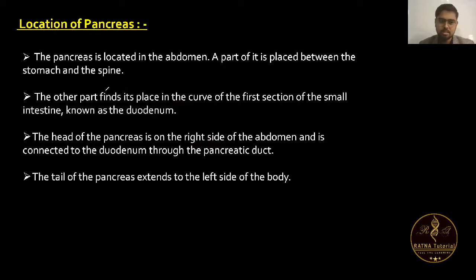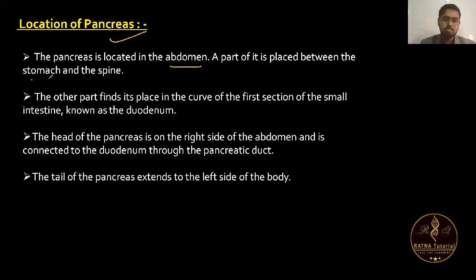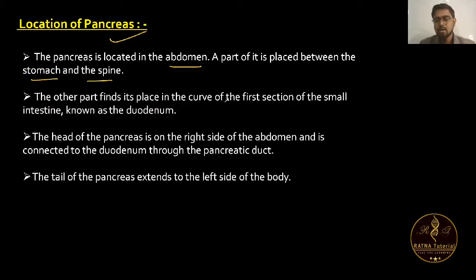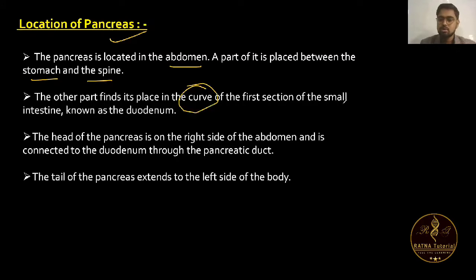Regarding the pancreas location: the pancreas is located in the abdomen. A part of it is placed between the stomach and spine. The other part finds its place in the curve of the first section of the small intestine, known as the duodenum.